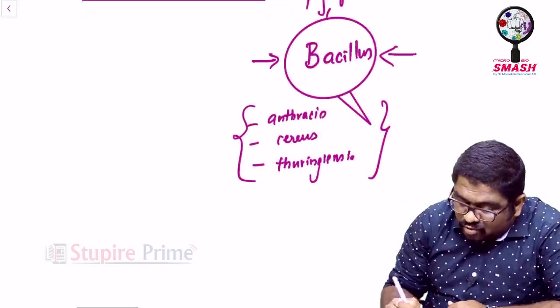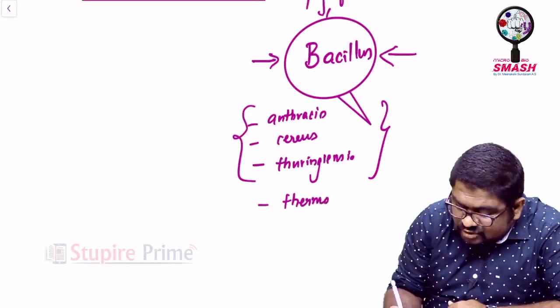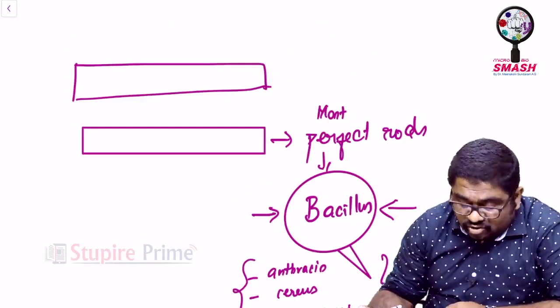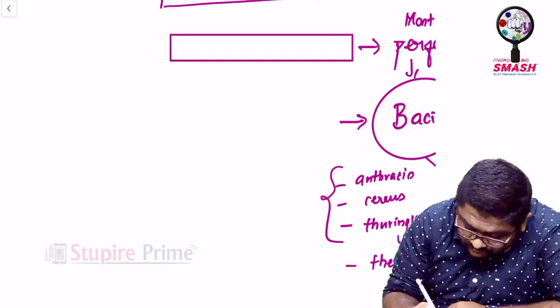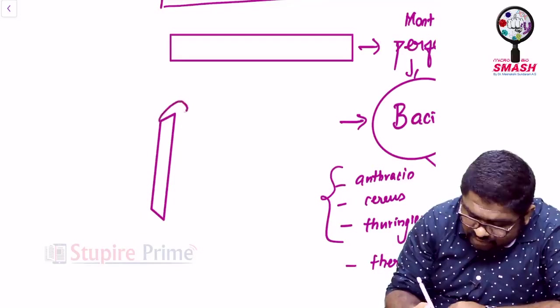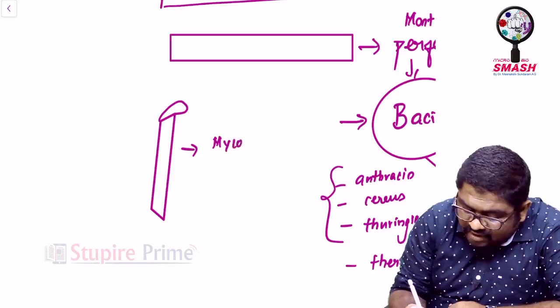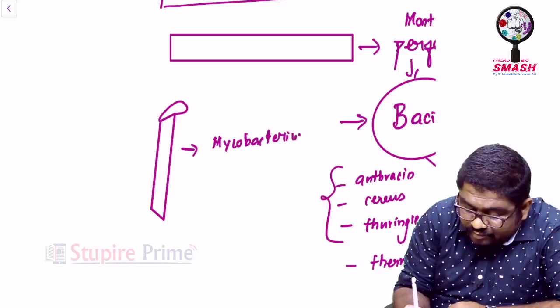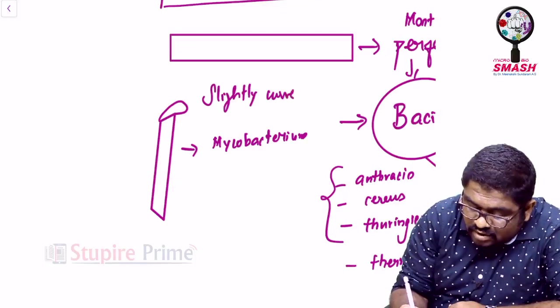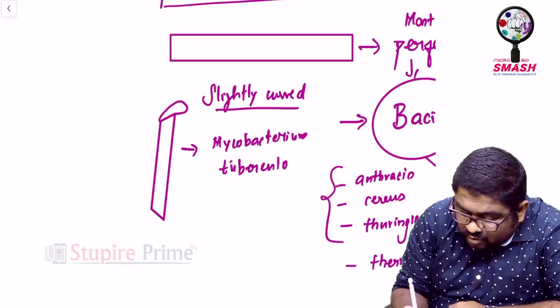There is another thermophilic organism called as Geobacillus stearothermophilus, which is used as an indicator in sterilization procedures. All these organisms can have near perfect rods. Now, think about it. If I draw a rod, which is slightly curved, which is slightly curved like this, then that can be Mycobacterium tuberculosis. Slightly curved rod can be given by an example called as Mycobacterium tuberculosis.